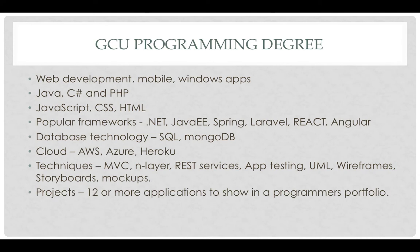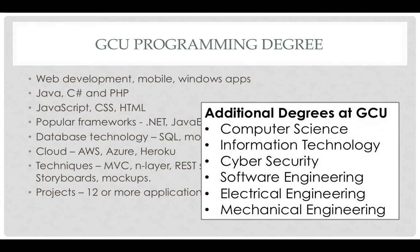When you leave this program, you'll have 12 or more applications that you can show to employers, and you'll have a variety of skills to go along with that. GCU has a variety of technology degrees — computer science, information technology, cybersecurity, or engineering. The computer programming degree is rather unique; you will hardly find any university in the United States focused on such software design.